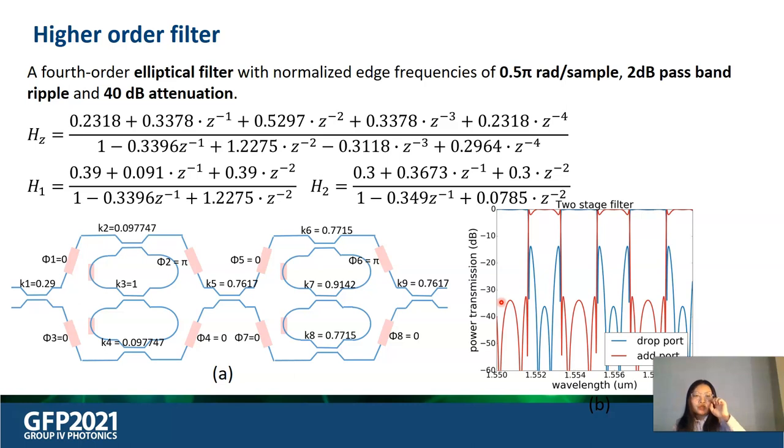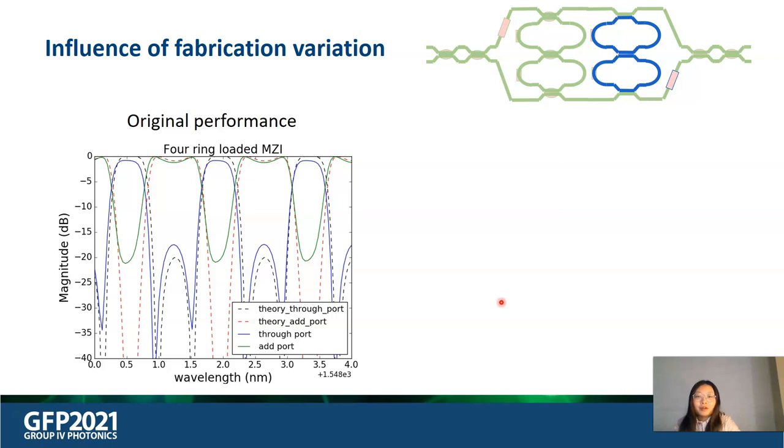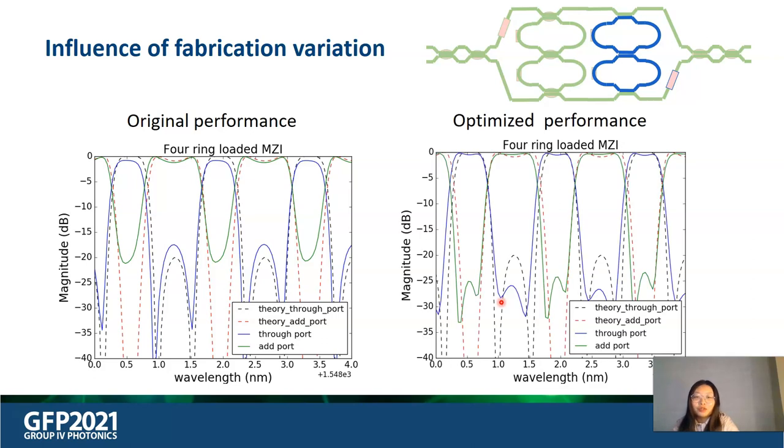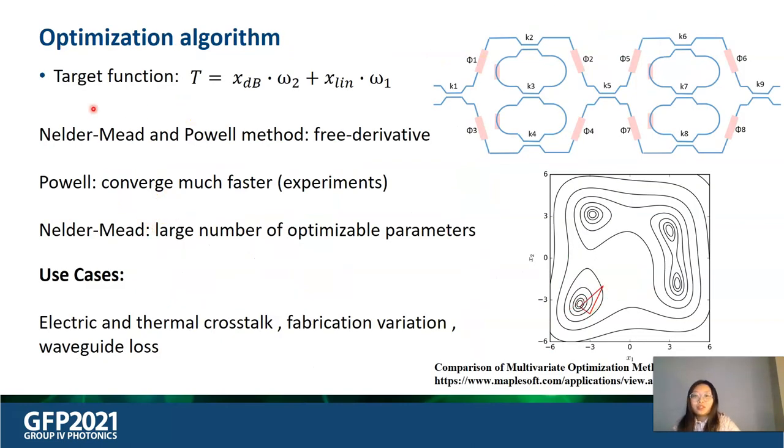In the following, we'll show how to use the optimization algorithm to improve the extinction ratio. The fabrication variation, thermal crosstalk between heaters, and electrical crosstalk between the channels of driving electronics are also downgrading the performance of the filter. Hence, the optimization step is needed in real experiments.